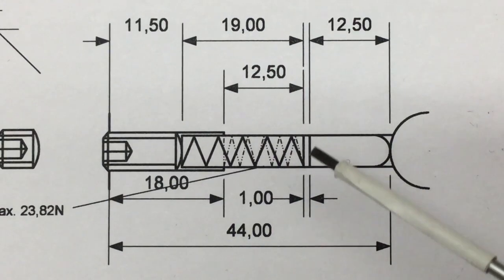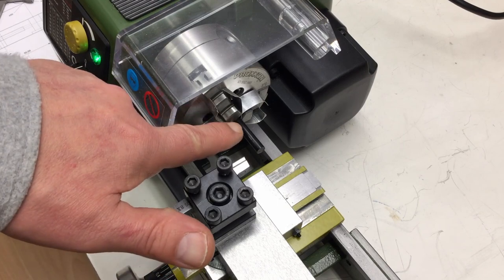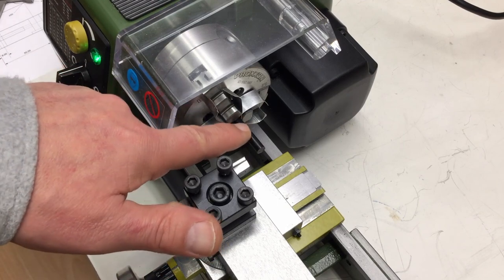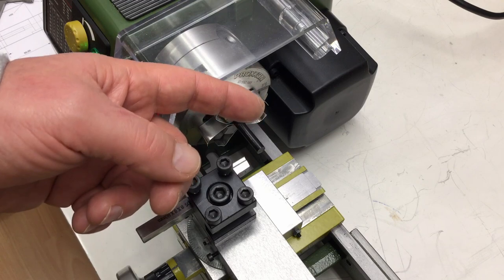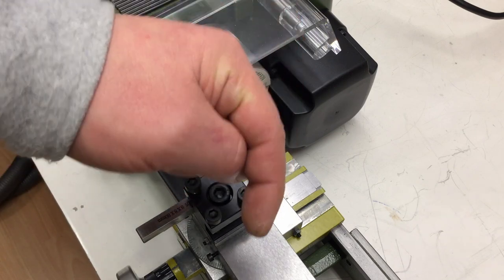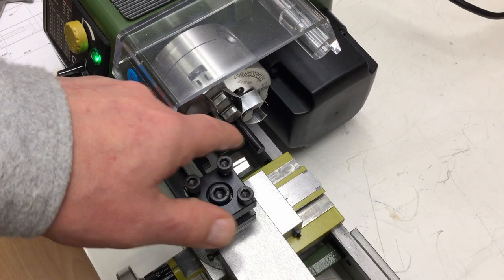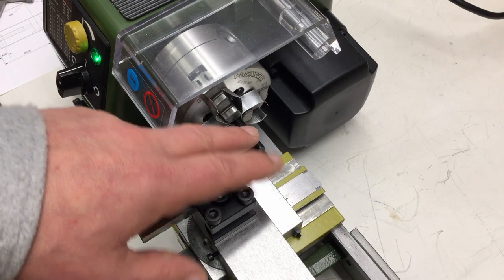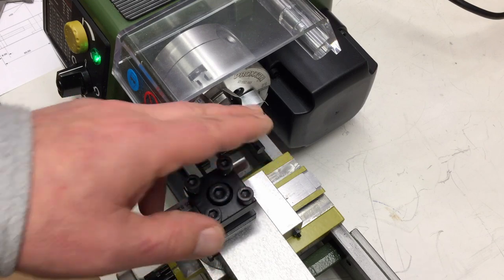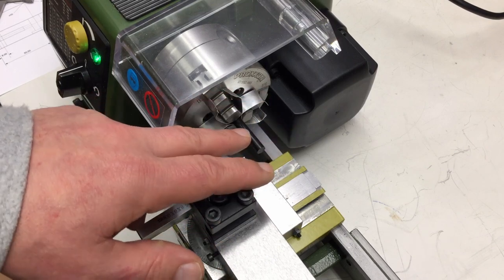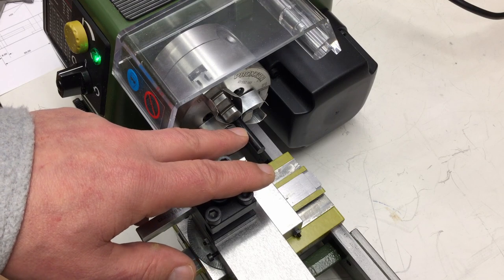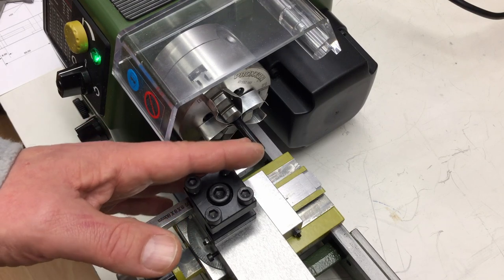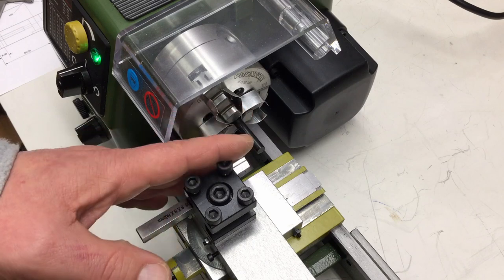Let's start with something simple. These POM discs here for isolation purposes. I have here 6 millimeter POM round stock. I will first turn that down to 4.9 millimeters. I don't want to press fit here. This should be just loosely between the spring and my plunger. And then we cut off four discs. That's basically it.